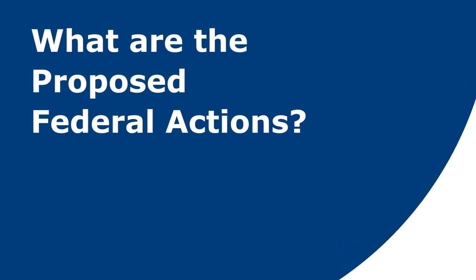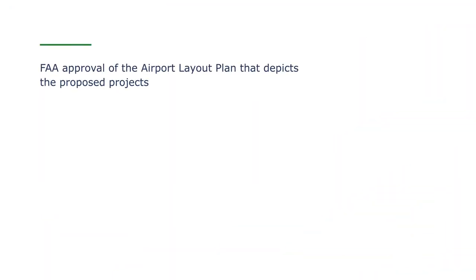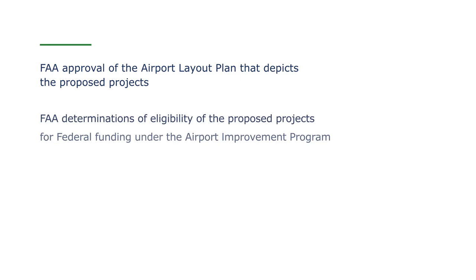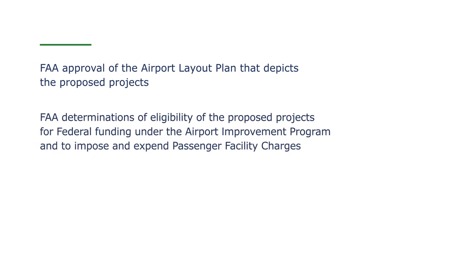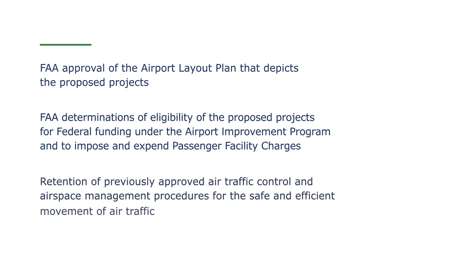Concerning proposed federal actions, the Chicago Department of Aviation is requesting that the FAA approve its airport layout plan, which depicts the proposed projects, and that the FAA determine the eligibility of the proposed projects for federal funding. In addition, the FAA's assessment is focused on retaining previously approved air traffic control and airspace management procedures for safe and efficient movement of air traffic in and around O'Hare Airport.